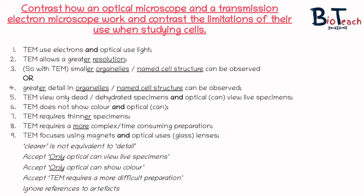Looking at the marking scheme, the first thing to note is the use of the word 'and'. When contrasting two separate microscopes it is a good idea to use the word 'and', so you would say one uses this and the other one uses that. In this example, we're saying that the TEM uses electrons and the optical uses light — that would be one mark. The next point is talking about resolution: the TEM allows greater resolution. Don't say 'great resolution' because in comparison to the optical microscope it is greater, and the question is asking you to compare. You could also talk about how smaller organelles can be observed in greater detail and name those cell structures.